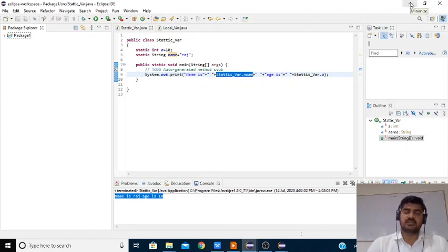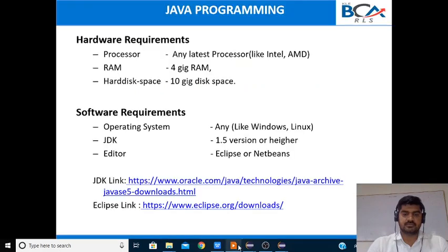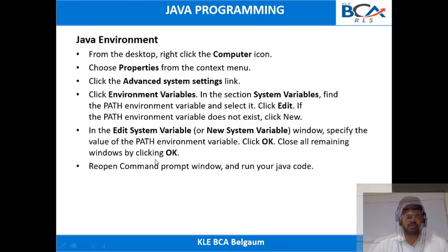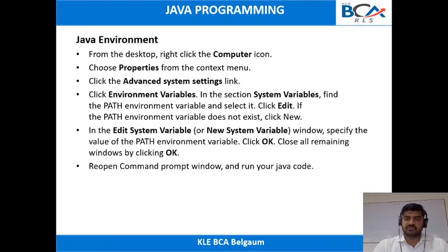Once you install JDK and Eclipse, you need to do one important thing: you need to set the environment variable. By following these steps you can set it: right-click on Computer, select Properties, then select Advanced System Settings, select Environment Variables, and in that select System Variables. Check whether the path environment variable is set or not. If the path environment is set, check whether the Java path is included. If not available, you can create a new environment variable.